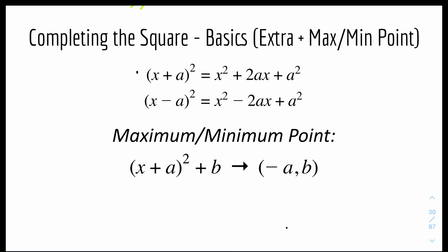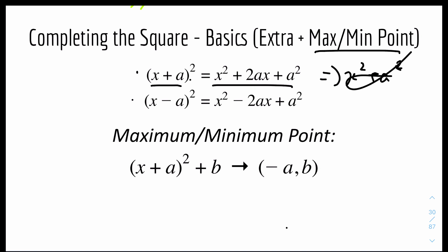Moving on, we have some basics for extra: the maximum and minimum point. First, the basics of how to expand the bracket. (x + a)² expands correctly — it is NOT just x² + a². That is incorrect. The same applies for negative: (x − a)² is NOT x² − a². That is incorrect. You can see how the two related terms share the same sign pattern.